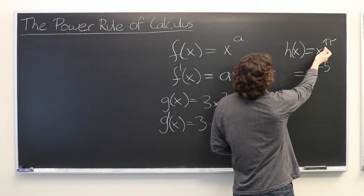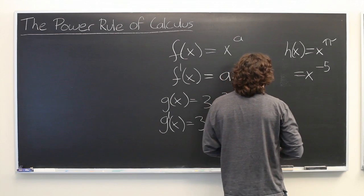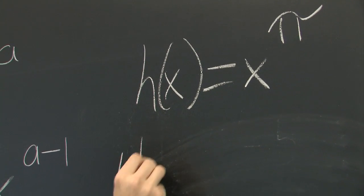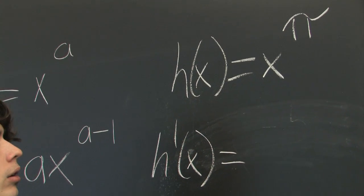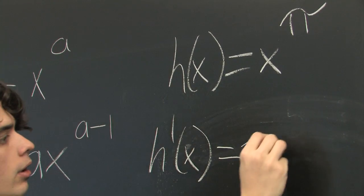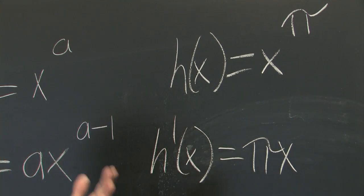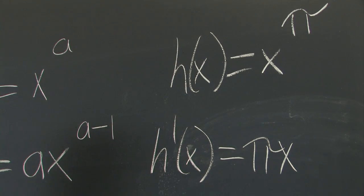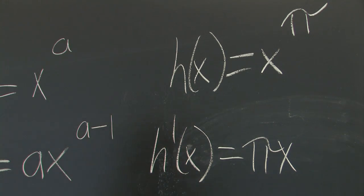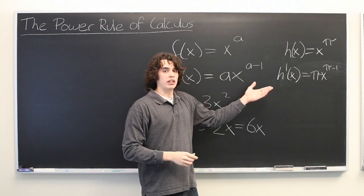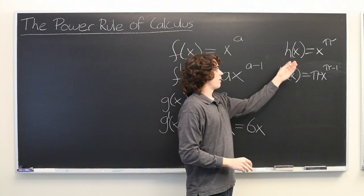So let's go through this example here with x equals pi. If we want to find the derivative of h, we bring down the exponent as we did before. It's pi times x. And then we simply subtract 1 from the exponent. But what is pi minus 1? It doesn't really matter. We can simply write that, pi minus 1. This is a perfectly valid way of expressing the derivative of h.